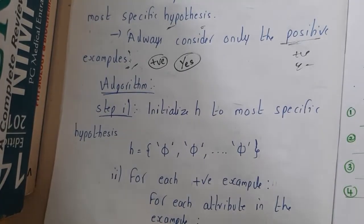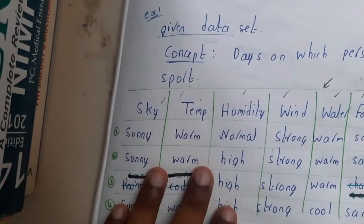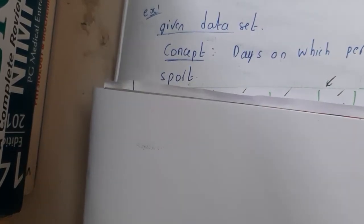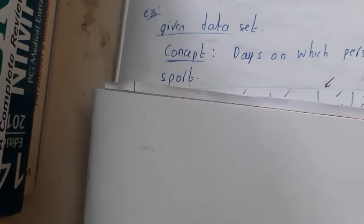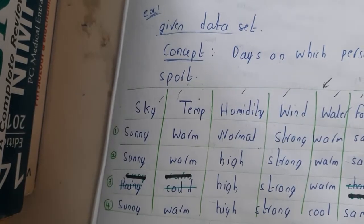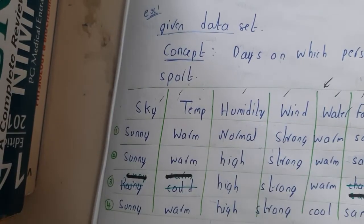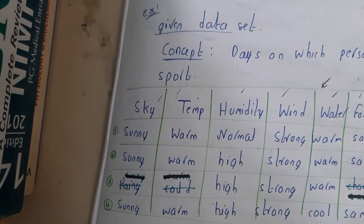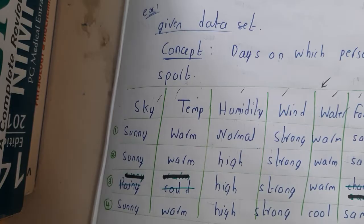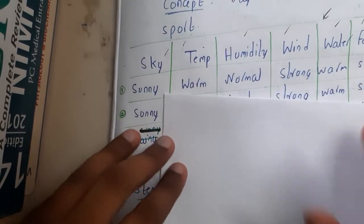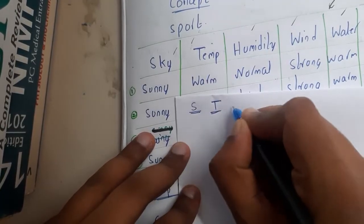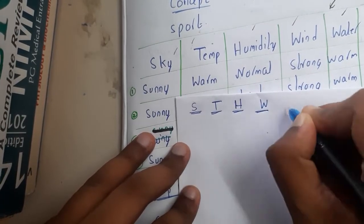Let me start with an example directly, and after that I'll come back to the algorithm. I'll take a piece of paper, write the question on it, and show it to you. So the attributes are: sky (S), temperature (T), humidity (H), wind, water, and forecast.